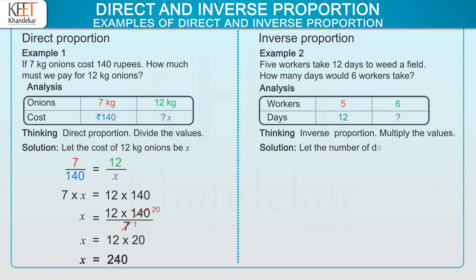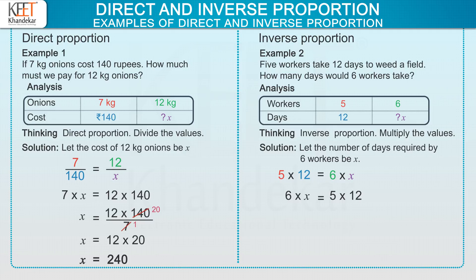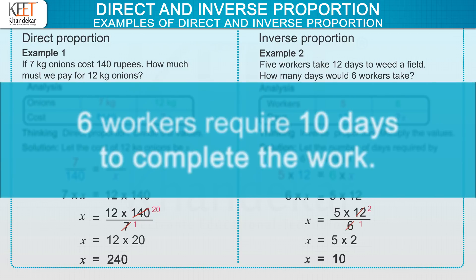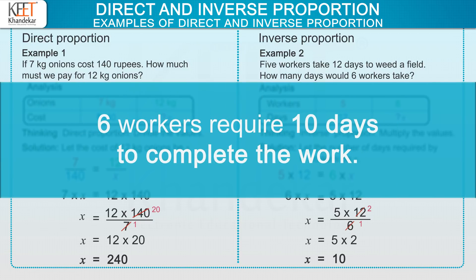Now let us solve example 2. Let the number of days required by 6 workers to complete the work be x. Here, there is inverse proportion, so multiply the values. So we get 5 into 12 equals 6 into x. Rewrite it as 6 into x equals 5 into 12. Now transfer 6 to the right hand side. We get x equals 5 into 12 upon 6. On reducing 12 and 6, we get x equals 5 into 2, that is x equals 10. Therefore, the answer is 6 workers requires 10 days to complete the work.